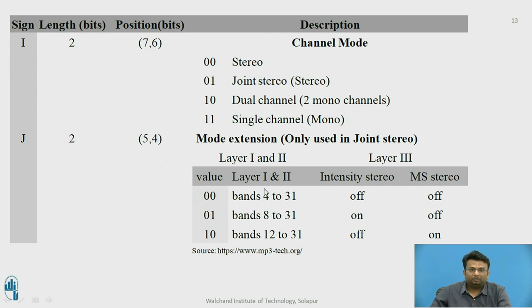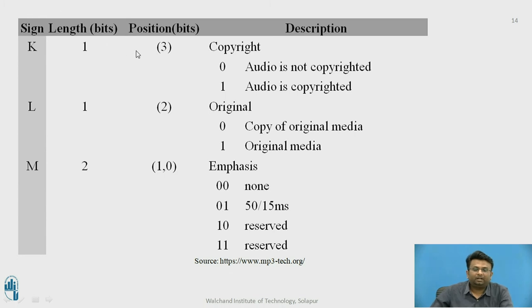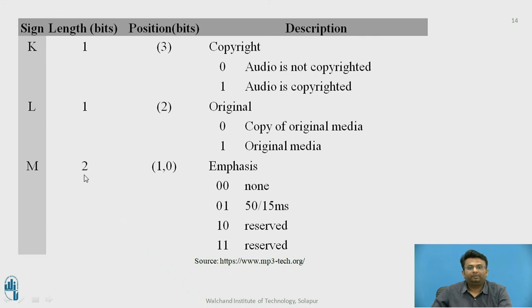For Layer 1 and 2, mode extension values: 00 = bands 4–31, 01 = bands 8–31, 10 = bands 12–31. Field K is 1 bit at position 3, used for copyright: 0 = not copyrighted, 1 = copyrighted. Field L is 1 bit at positions 1–0, indicating original media: 0 = copy of original, 1 = original data. Field M is 2 bits at positions 1 and 0, used for emphasis: 00 = no emphasis, 01 = 50/15 ms emphasis, 10 and 11 = reserved.